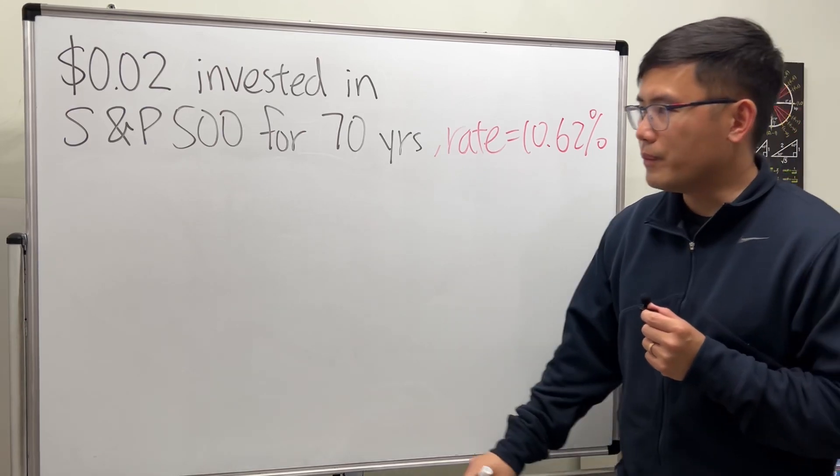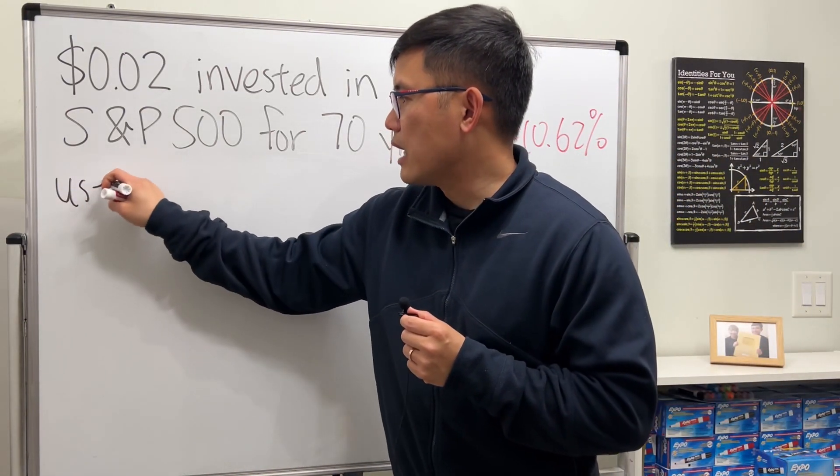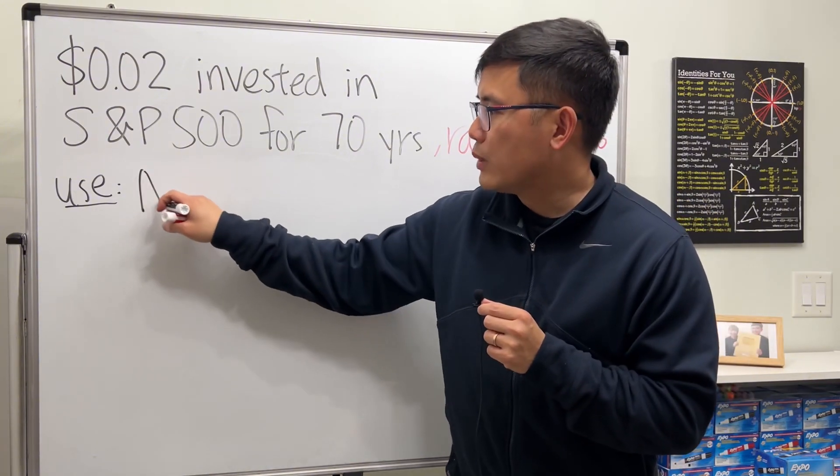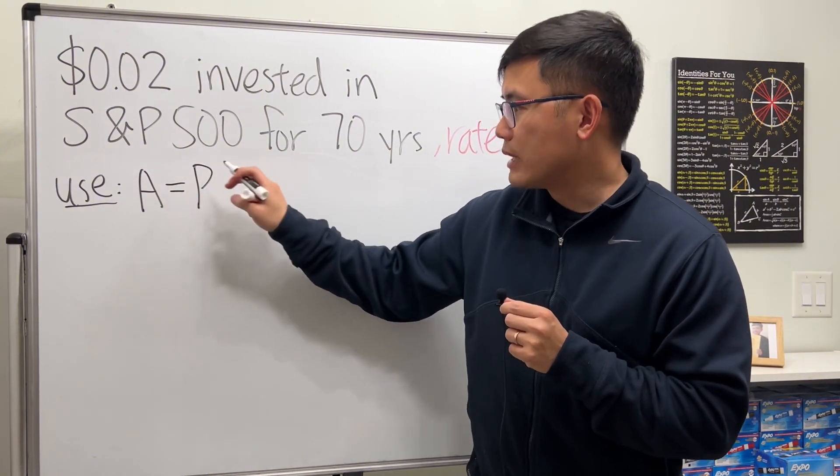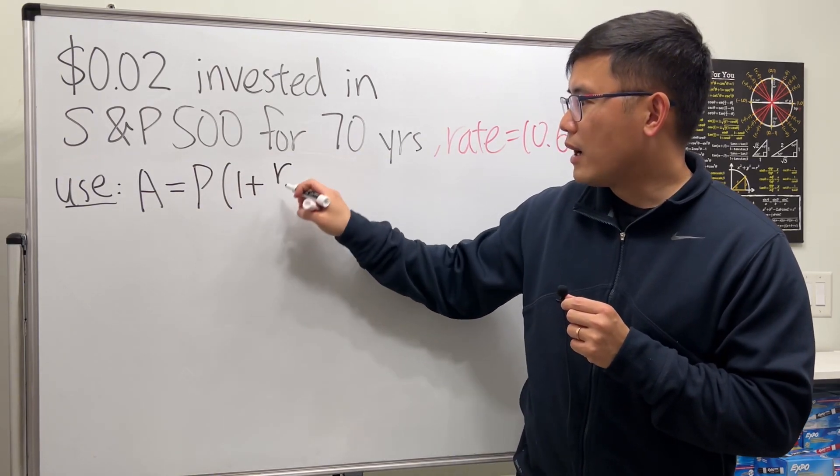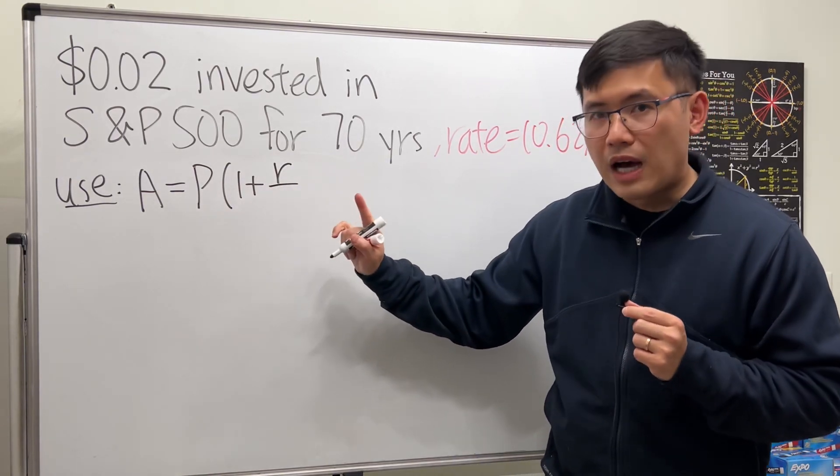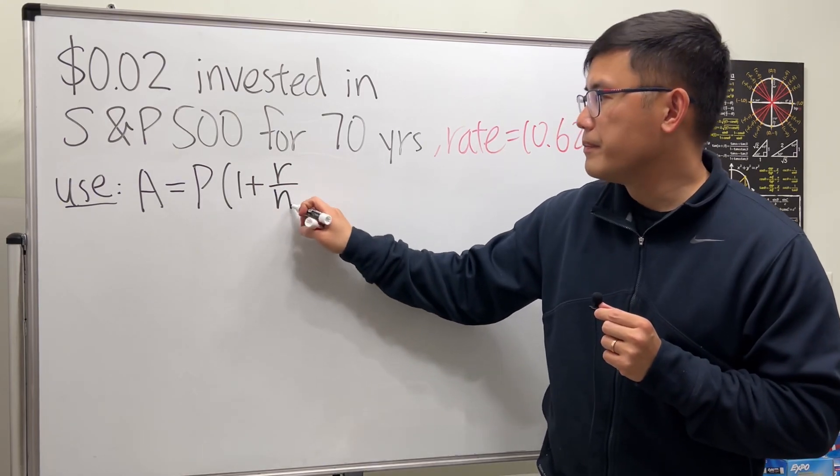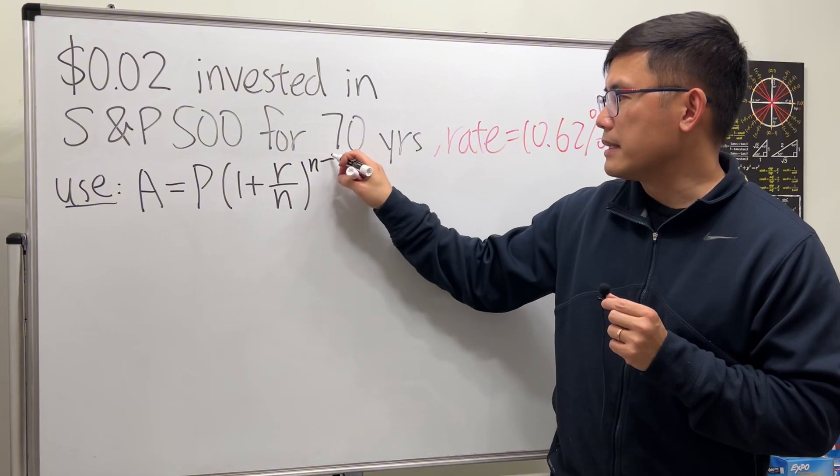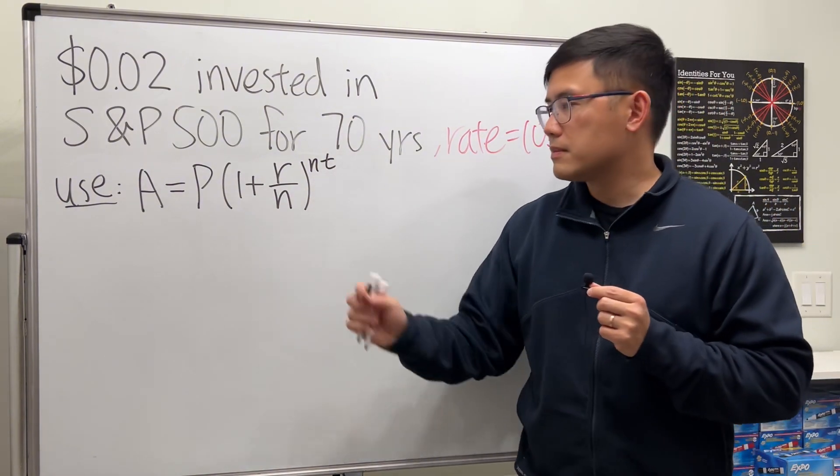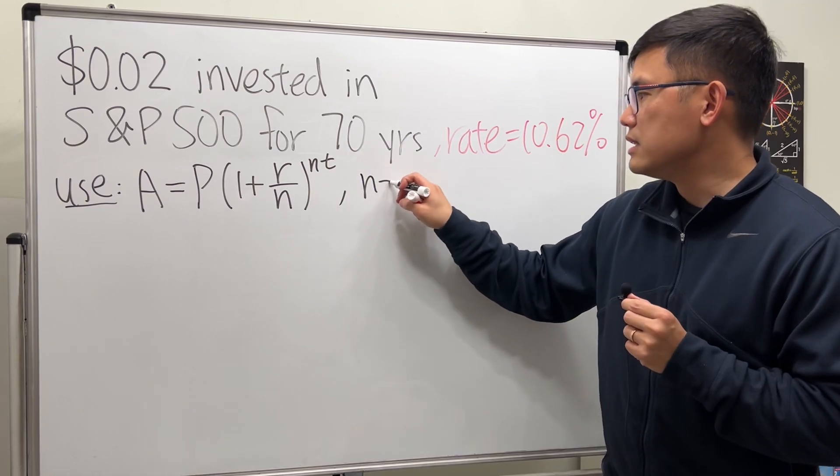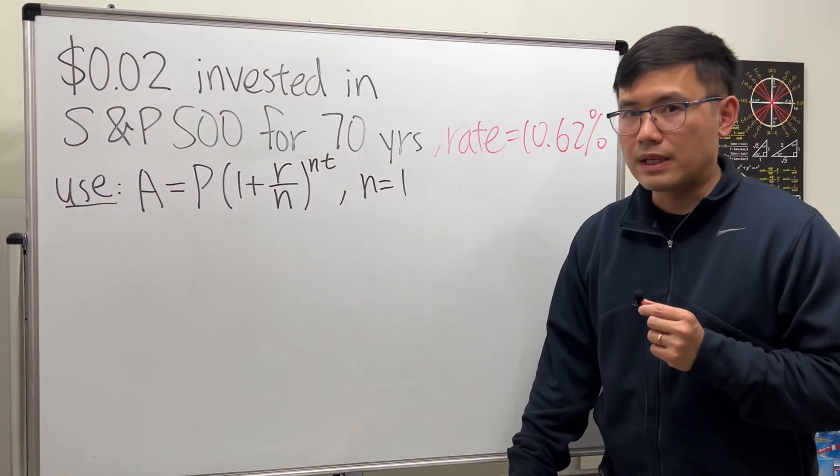But how do we figure this out though? Well, here we'll use the compound interest formula which says the amount that we are going to get equals the principal that we have times one plus the interest rate r divided by however many times we compound a year, times the same n right here, and then multiply by t. T is the number of years, and for this question let's just say n is equal to one.